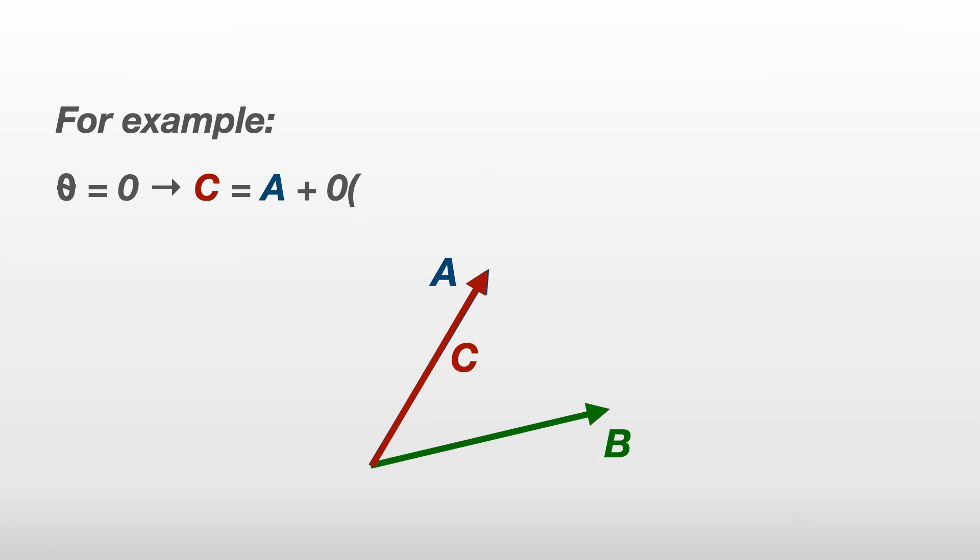For example, if theta is 0, then c equals a plus 0 times b minus a, which is just a. At the other end of the scale, if theta is equal to 1, then c equals a plus b minus a, which is just b.